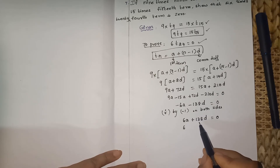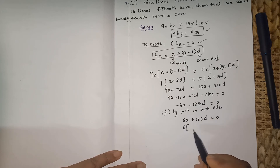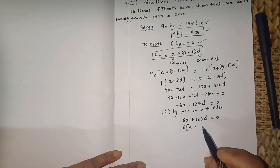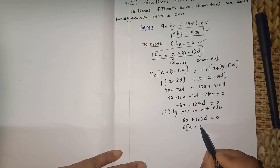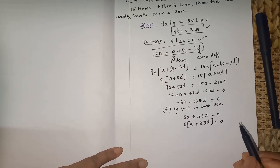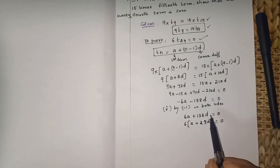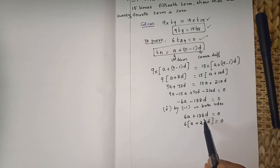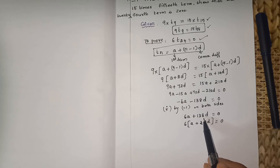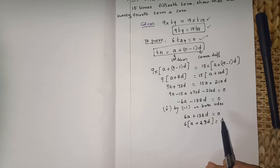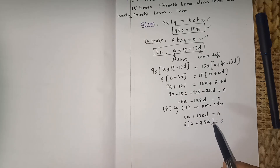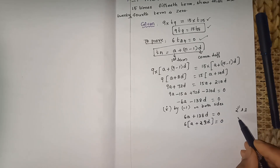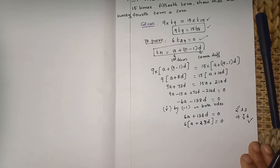Taking 6 as common: 6 times (a plus 23d) equals 0. To check that 138 is divisible by 6: it ends in 8 so divisible by 2. Adding its digits: 1 plus 3 plus 8 equals 12, which is divisible by 3. When a number is divisible by both 2 and 3, it is also divisible by 6. So 138 divided by 6 is 23, confirming 6(a plus 23d) equals 0.